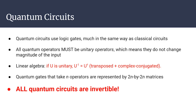Now that we know what a qubit is, let's talk about how to use them. Quantum circuits use logic gates, very similar to classical logic gates like AND and NOT. However, quantum operators must be unitary operators — they don't change the magnitude of the input, keeping magnitude always equal to 1. A unitary operator's inverse equals its transposed complex conjugate. A quantum gate taking n qubits is represented by a 2^n × 2^n matrix. Importantly, all quantum circuits are invertible because all quantum gates are invertible.